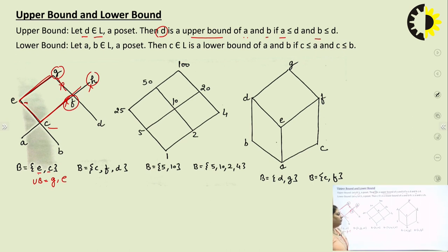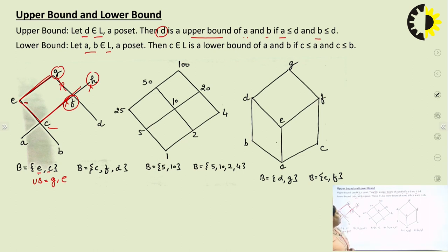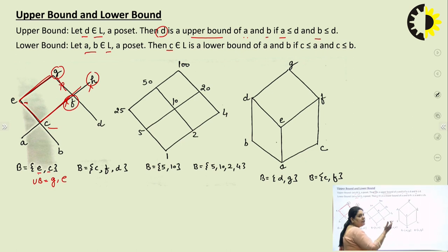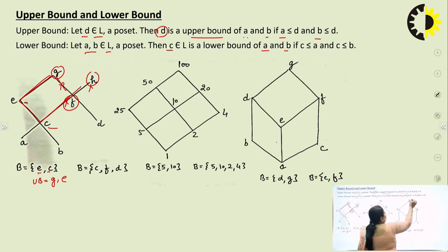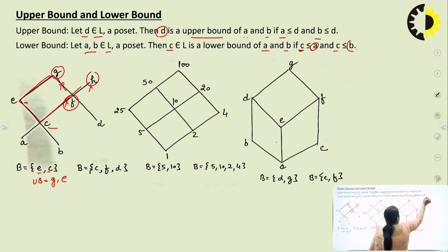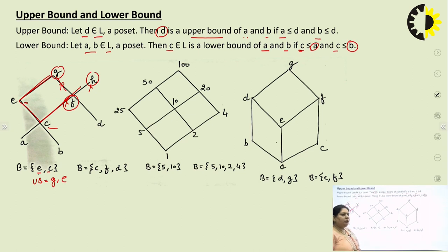Now we check the lower bound. What is lower bound? Suppose there are two elements A and B in poset L. There is another element C related to the poset. C is said to be the lower bound of A and B if C is less than or equal to both A and B — that is, C is at a lower position and related to both.